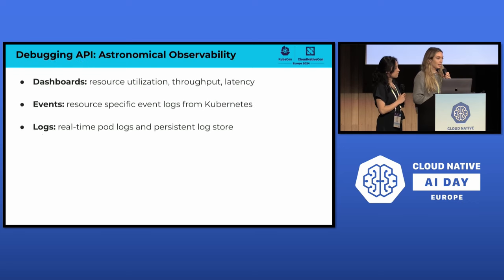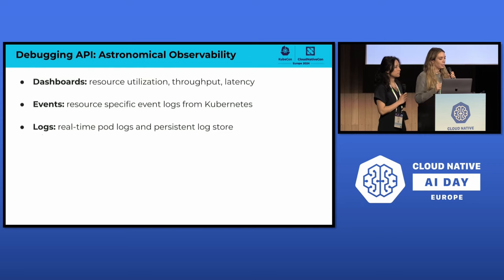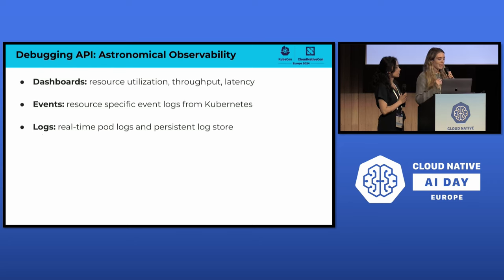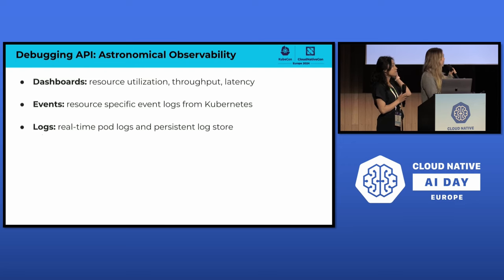We also provide customized debuggable links. On these dashboards you can find resource utilization, throughput, and latency at every resource level. Our teams worked hard to curate a small number of really good graphs for our users. We also show Kubernetes events at every resource and real-time pod logs. For when pods go away, we also have a persistent log store, so users can observe their services better outside of the UI if needed.